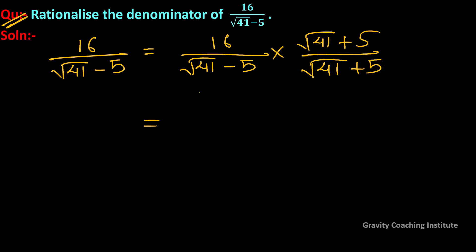So equal to, we will multiply both numerator and denominator. We will get 16 bracket under root 41 plus 5 in the numerator.